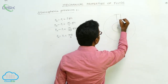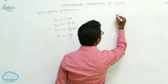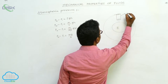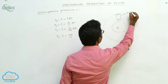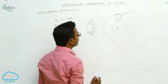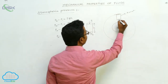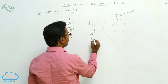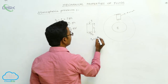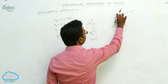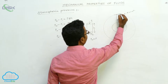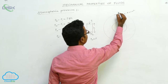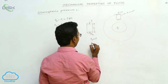Imagine a cylinder of area of cross-section A equals 1 meter square. At this point pressure is P2. Now to what height is the atmosphere extended? At the top, beyond that point, there is no pressure. So P1 is equal to zero.